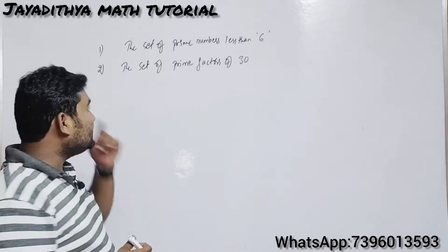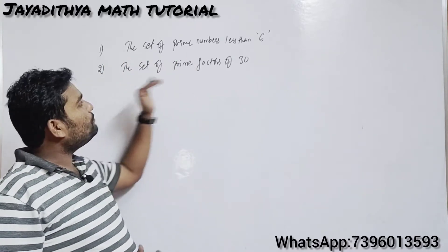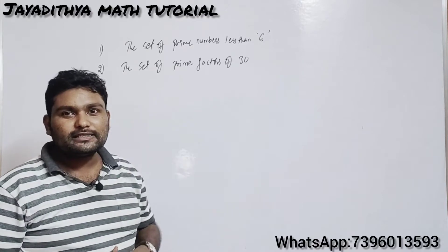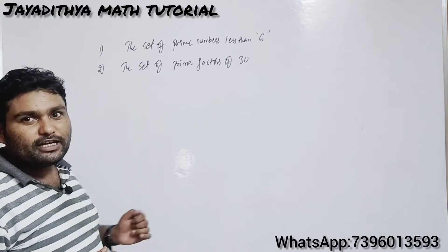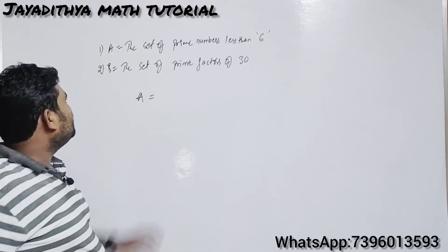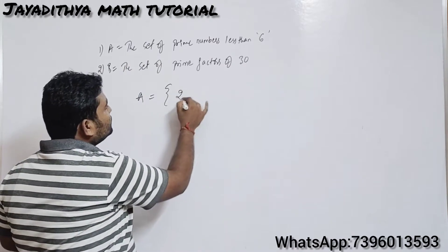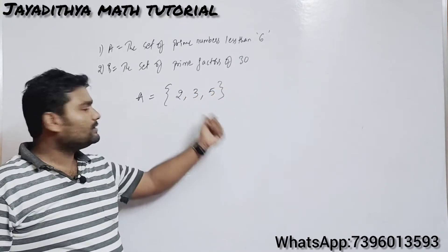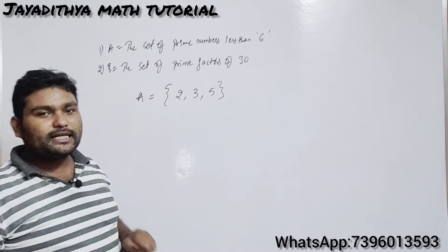Let us see some situations. The first one is the set of prime numbers less than 6, and the second one is the set of prime factors of 30. Let us try to write each of them in roster form. Let this be set A and this be set B. In set A, the set of prime numbers less than 6 — the prime numbers less than 6 are 2, 3, and 5.